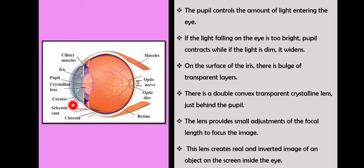The lens provides small adjustments of the focal length to focus the image. The pupil ensures how much light will enter, and then the lens automatically makes small adjustments to provide the particular focal length.